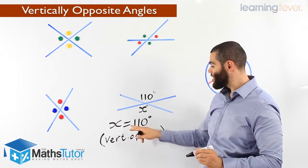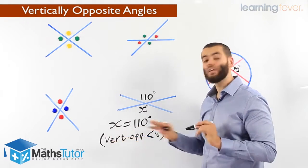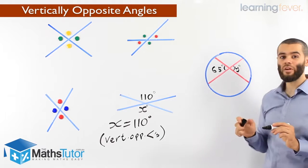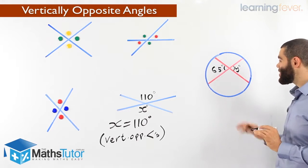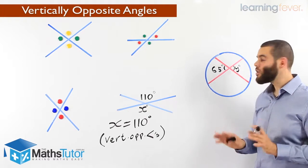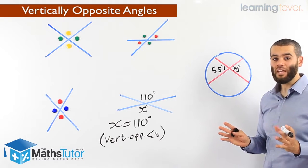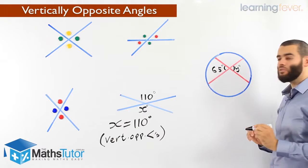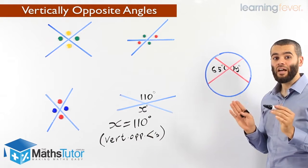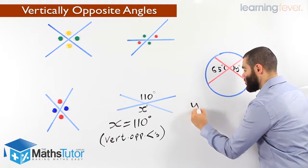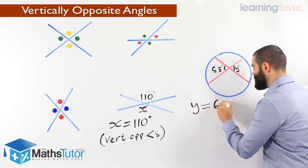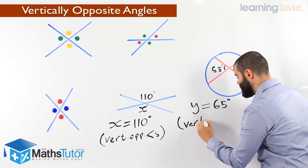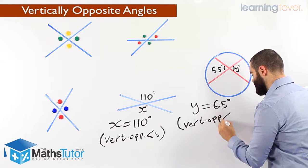X is 110. Why? Because they are vertically opposite angles. Looking at this diagram here, we can see that we have a circle and two straight lines crossing one another inside the circle. Having the circle doesn't need to worry us at all — we just need to see and locate where our vertically opposite angles are. We can see a straight line here, straight line there. Therefore, this angle is vertically opposite to that angle, which tells us they are equal in size because they are vertically opposite angles. Y equals 65 degrees. Our reason: vertically opposite angles.